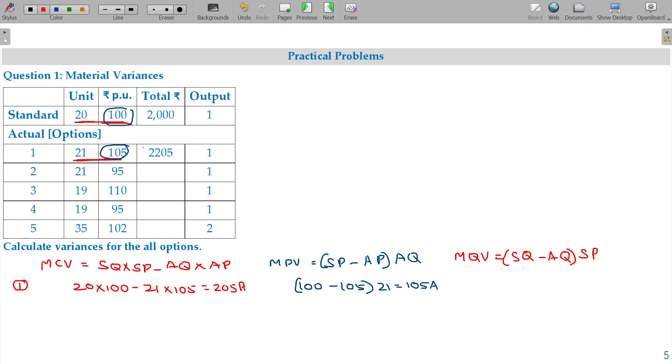Material quantity variance, we are considering the quantities here, standard quantity 20, actual quantity being 21. So you consume one quantity extra, that standard price being 100. So 100 adverse. You know that if you sum up these two, you will get cost variance, verify in all the cases.